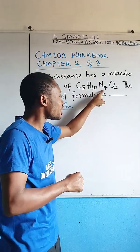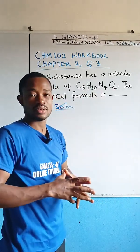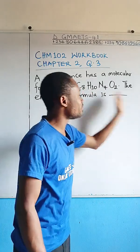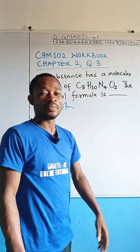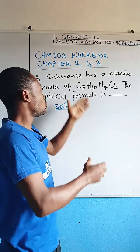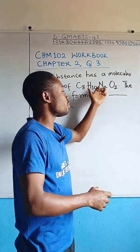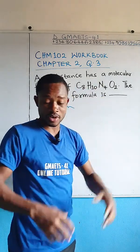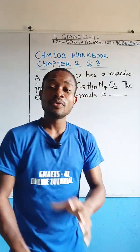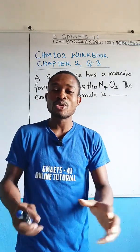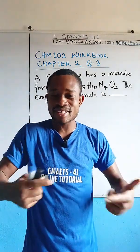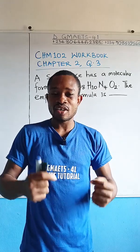Factorize the highest common factor of these atomicities. If you factorize two from the atomicities, whatever you're left with for these atoms becomes the empirical formula. Now what I really want to show you here is why that approach is the correct thing to do for this question.